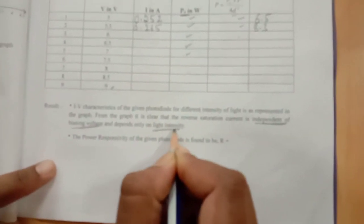Very important: independent of your biasing voltage and depends only on the light intensity or intensity of the bulb. The second result is whatever calculation you have done in order to calculate the power responsivity of the given photodiode. That value you mention. Thank you.